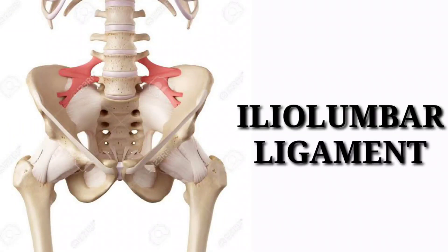The iliolumbar ligament is ideally a vertebro-pelvic ligament with three bands. The bands arise from the body and tip of the transverse processes of L4 and L5 vertebrae and continue deep to the anterior lip of the iliac crest. It resists movement of the lumbar and SI joints.